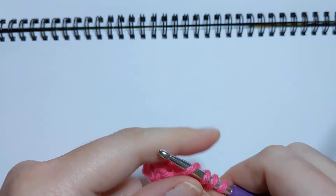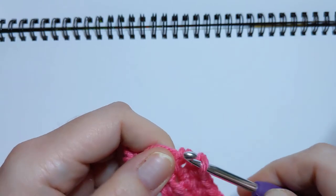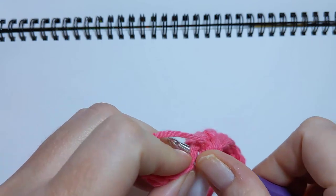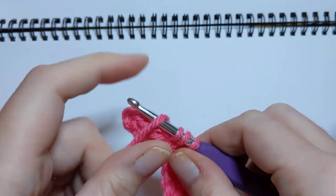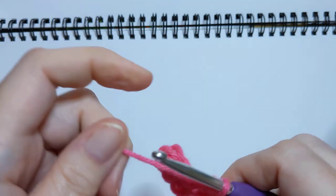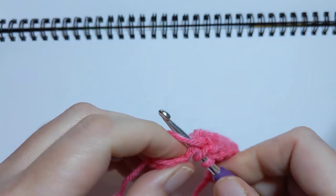And I'm doing that all the way across to the end of our little row. Now remember, we started off this little row with 12 stitches. At the end, we're going to have 11 because we crocheted two together. Okay, almost there.